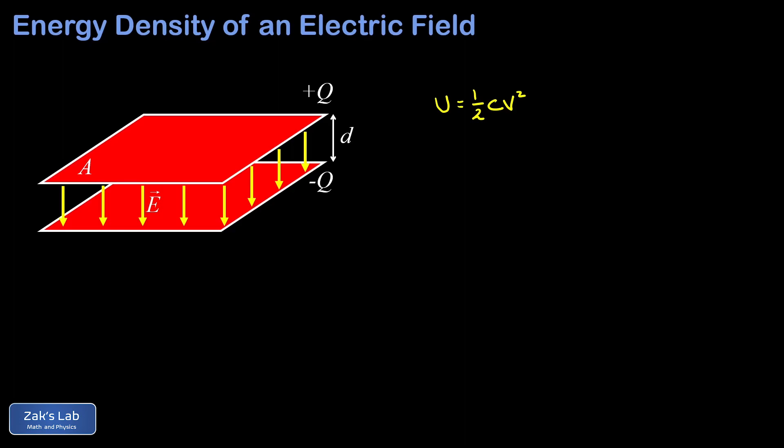The way we think about it is that the electric field gives us an energy density in the space between the plates. This energy density, we can call that little u, is given by the total energy stored in this capacitor divided by the volume that that electric field is spread out through.